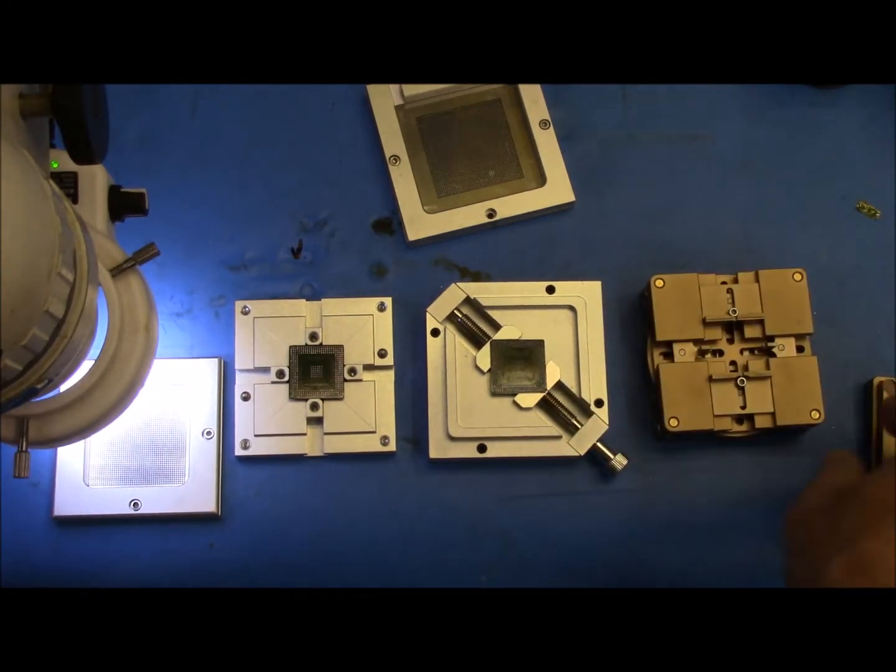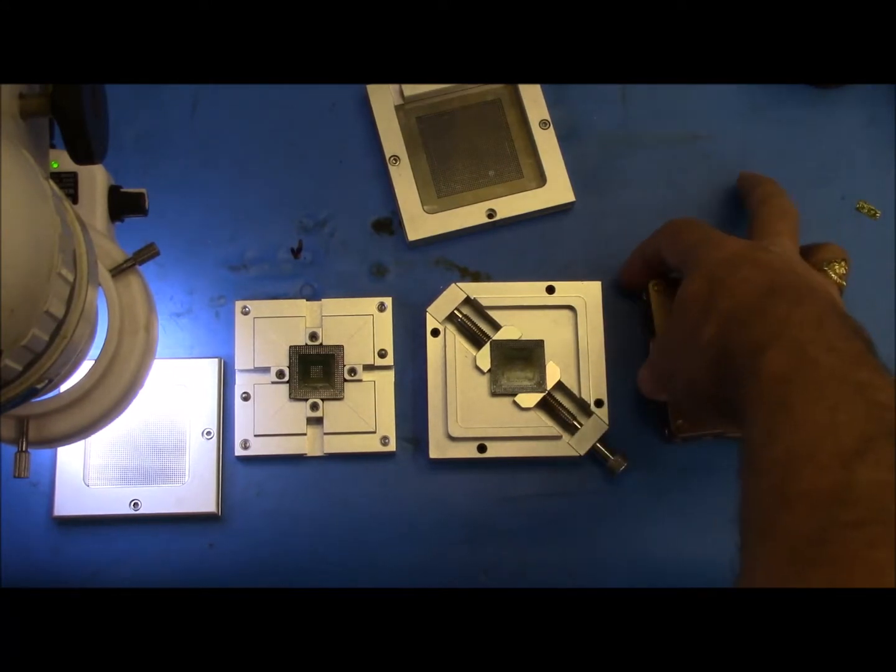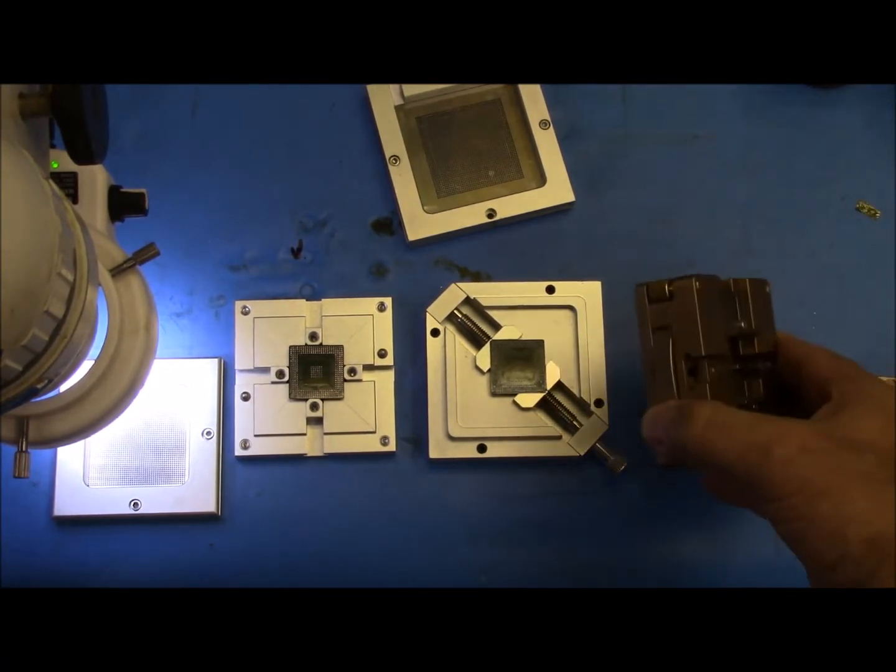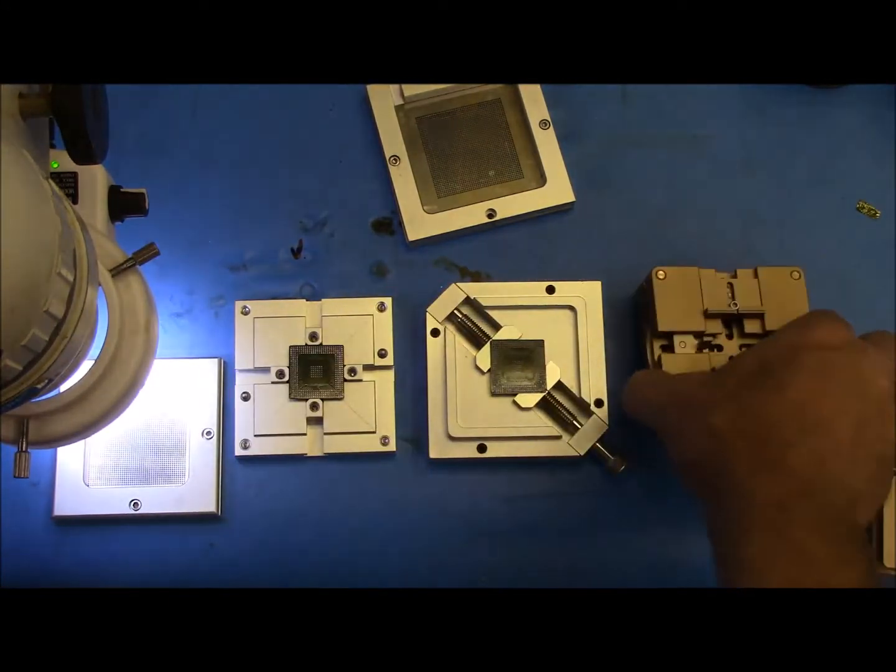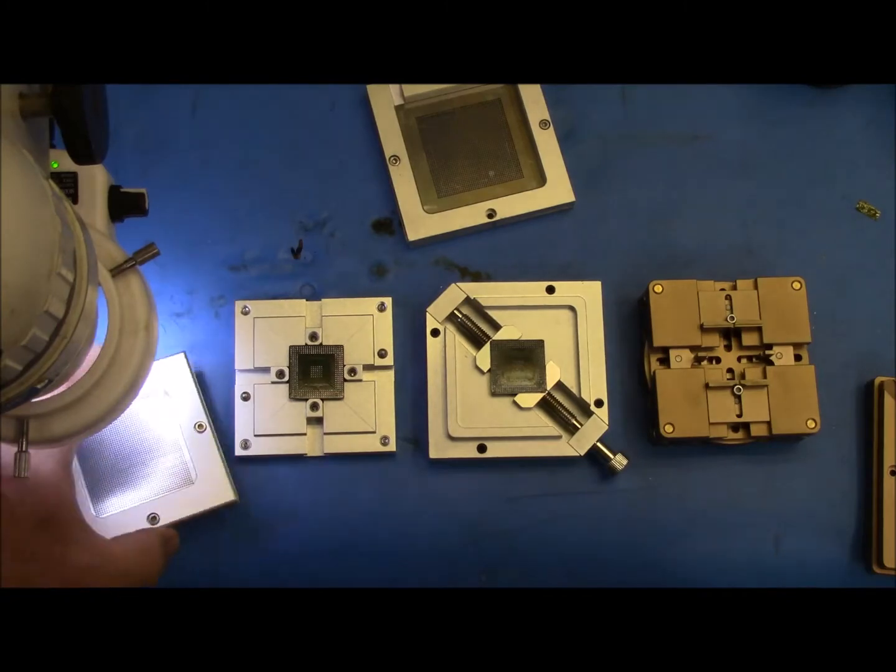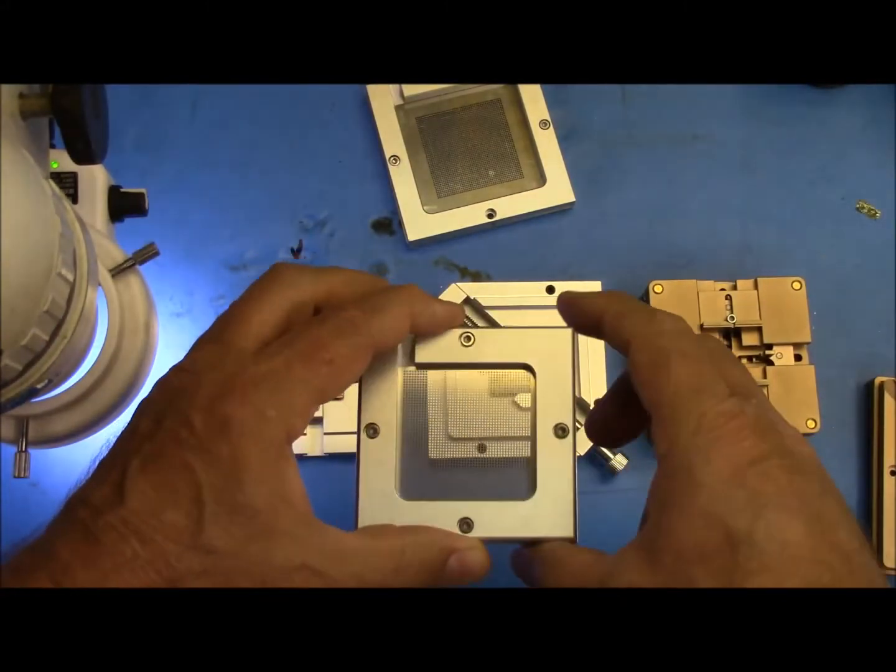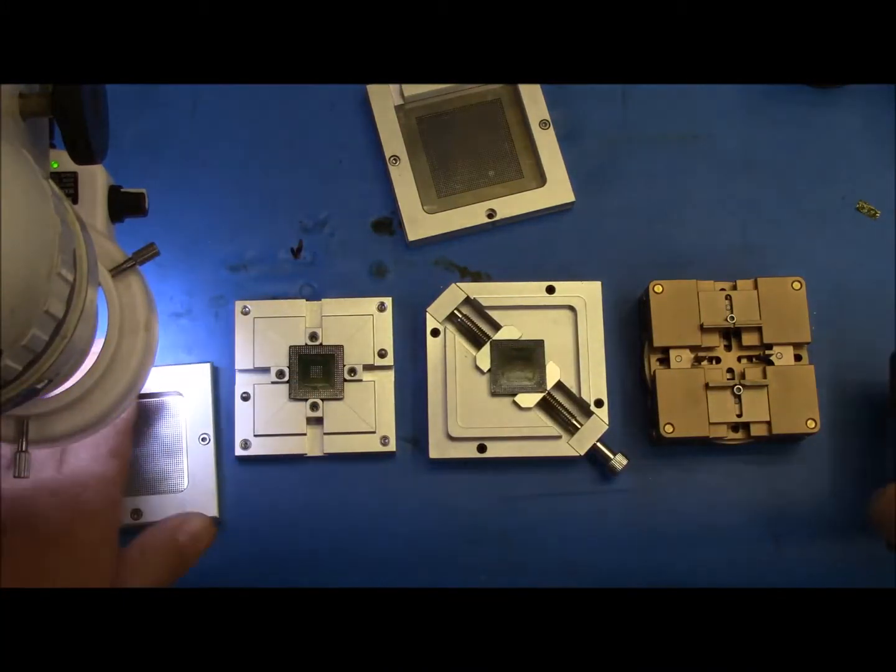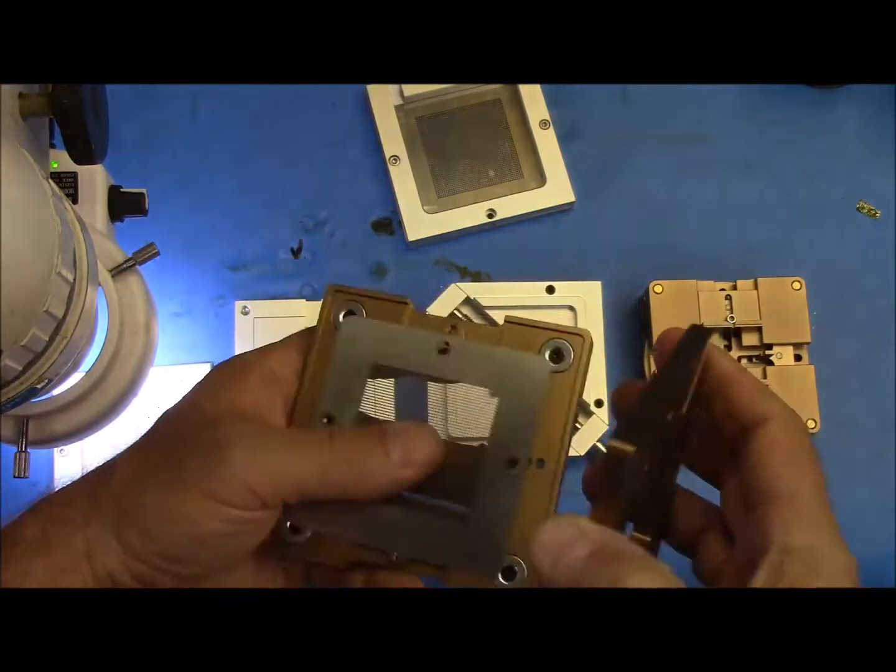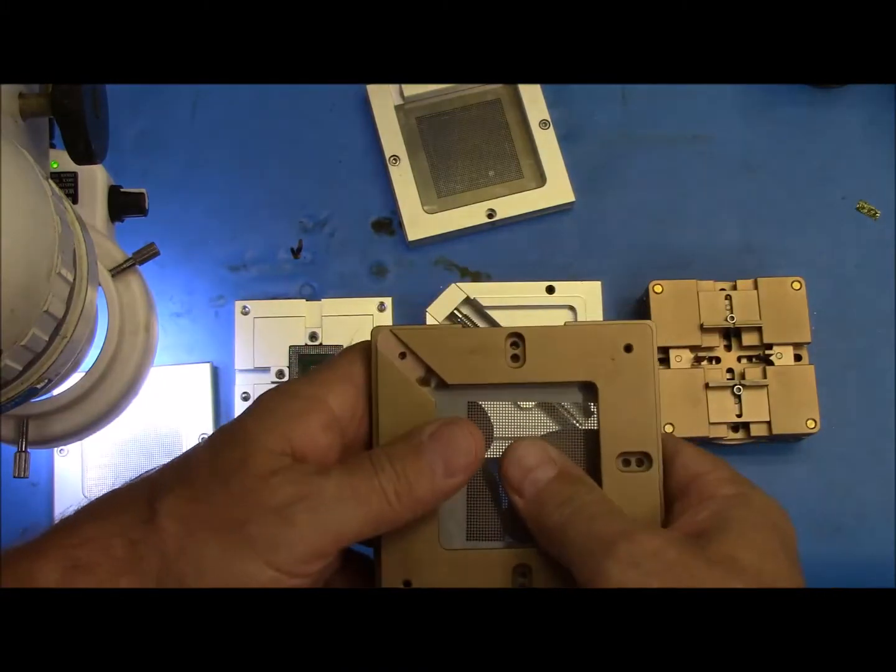Now this particular one has what they call thumb screws on the side so you don't have to use an allen wrench, you can just adjust it on the side by turning these screws. So it's a little bit quicker. Now these two here, you have to take the allen screws out, open this up and put the stencil in. This one here is magnetic so I can put the stencil in, just put the magnet on top.